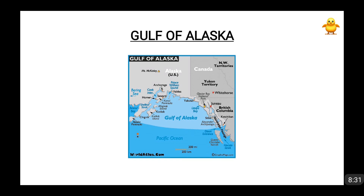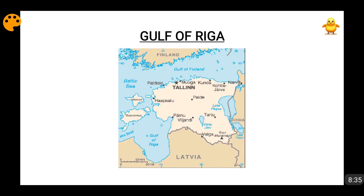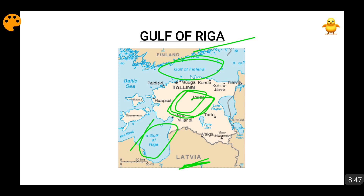Moving forward, we come to the Gulf of Riga. As I already discussed the Gulf of Finland, moving south we come to the Gulf of Riga. This is Latvia and this is Estonia, which is the location of the Gulf of Riga. It is a part of the Baltic Sea, connected through the Irbe Strait (I-R-B-E). The Gulf of Riga falls within Latvia and Estonia.